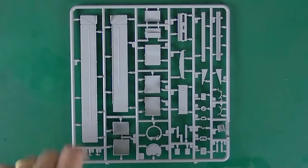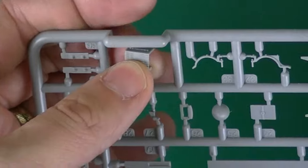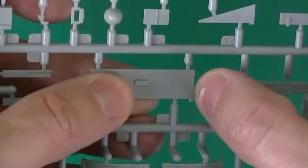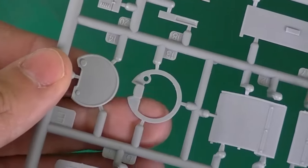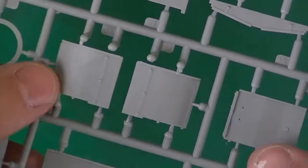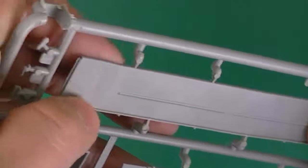Next we have this sprue which looks like fenders and the hatch and a few other things. This looks okay. These fenders look nice. Not quite as thin as I'd expect. Hatch looks pretty good. These fenders have quite a lot of detail on top. These are molded in quite nicely.